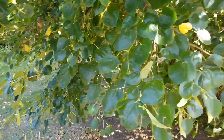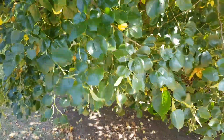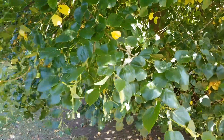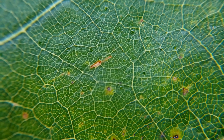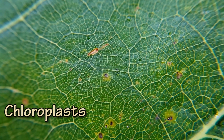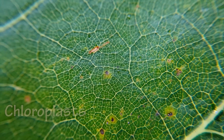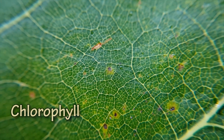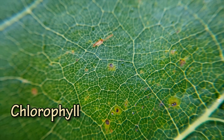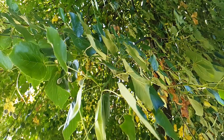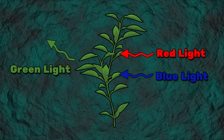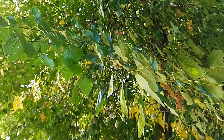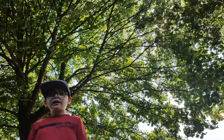Photosynthesis takes place in the leaves of trees and plants. These leaves are made up of very small cells, and inside these cells are very tiny structures called chloroplasts. These chloroplasts contain a chemical called chlorophyll. It's the chlorophyll that gives leaves their green colour. Chlorophyll reflects green light and absorbs red and blue light, which is why most leaves look green.